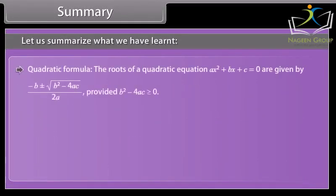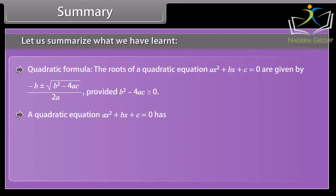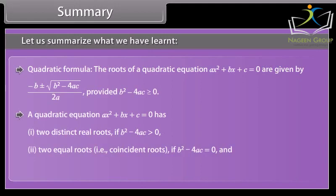Quadratic formula. The roots of ax² + bx + c = 0 are given by x = (−b ± √(b² − 4ac)) / 2a, provided b² − 4ac ≥ 0. A quadratic equation has: two distinct real roots if b² − 4ac > 0; two equal (coincident) roots if b² − 4ac = 0; and no real roots if b² − 4ac < 0.